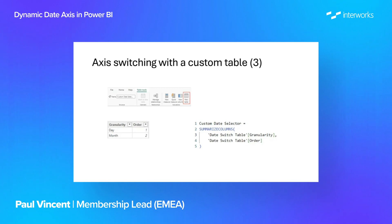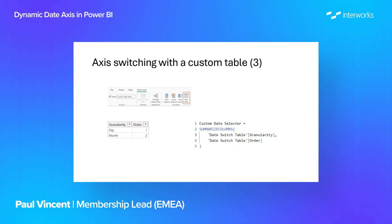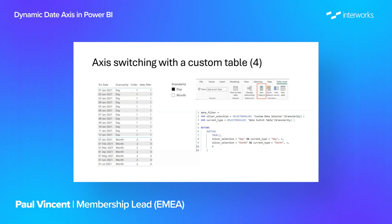Next we need a method of selecting the date resolution we want to see, so we create another table to be used in a slicer. It's a simple table — we just need the different names of the granularities and some order to those. We can do that manually or by using a SUMMARIZECOLUMNS expression that goes through the custom table and brings in all the different granularities. Now we have a slicer table and we're ready to build this up, but the one thing still missing is a mechanism that links up the selection table and the custom date table. For that we're going to use a measure — a new measure which will do that switching for us, which I've called date filter.